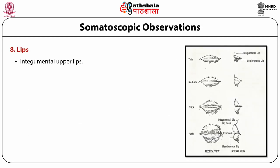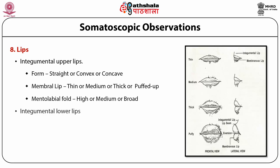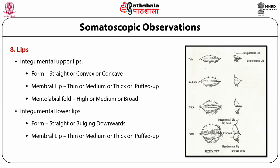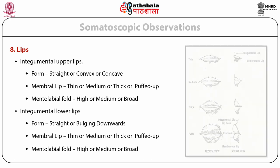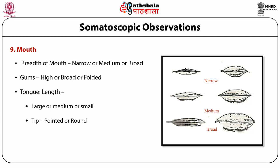Lips: integumental upper lip form (straight, convex, or concave); membranous lip (thin, medium, thick, or puffed up); mentolabial fold (high, medium, or broad). Integumental lower lip form (straight or bulging downwards); membranous lip (thin, medium, thick, or puffed up); mentolabial fold (high, medium, or broad). Mouth: breadth of mouth (narrow, medium, or broad); gums (high, broad, or folded); tongue — length (large, medium, or small); tip (pointed or round); thickness (thin, medium, or thick).